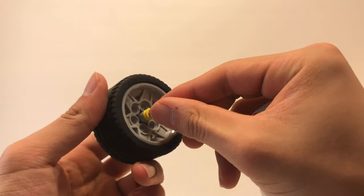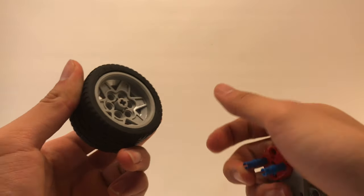By using those blue connectors, you can even attach the wheel without an axle, like this.